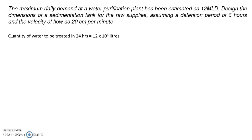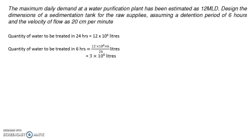The quantity of water to be treated in 24 hours is 12 × 10⁶ liters. For one hour it is 12 × 10⁶ divided by 24 liters. The quantity to be treated in six hours — the detention period — is (12 × 10⁶ / 24) × 6, which is around 3 × 10⁶ liters, i.e., 3 million liters.